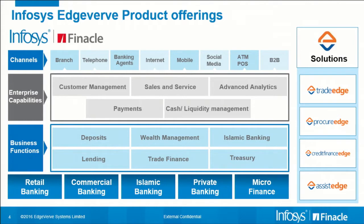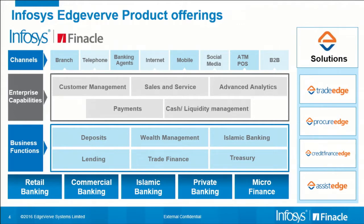We also have the Edge solutions: Trade Edge, which facilitates trade; Procure for procurement; Credit Finance; and Assist Edge, a very cool product for call center help built into your applications, providing instant dial-up to a person on the line or over the web. The Finical Core universal banking solution is comprehensive — about 16.5% of the adult banked population worldwide is running on a Finical system. We have 450 implementations across 84 countries, relatively new in the United States but we're working on that.